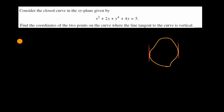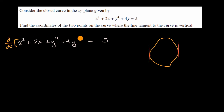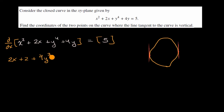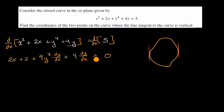Let me rewrite everything. I have x squared plus two x plus y to the fourth plus four y is equal to five. I want to take the derivative with respect to x of both sides of this equation. This is going to be equal to two x plus two, plus the derivative of y to the fourth with respect to y, which is four y to the third, times dy/dx — that's straight out of the chain rule — plus four times dy/dx, again from the chain rule, is equal to zero.